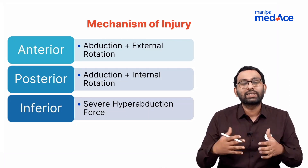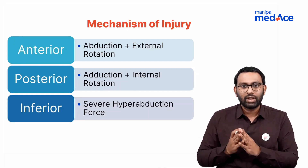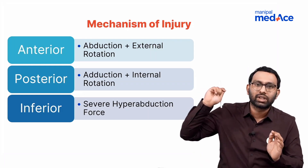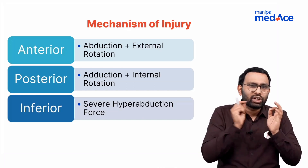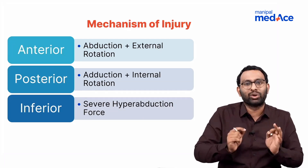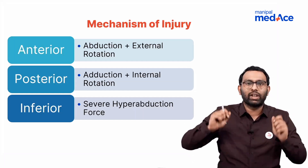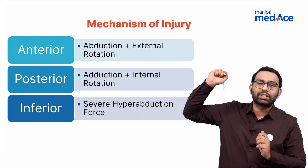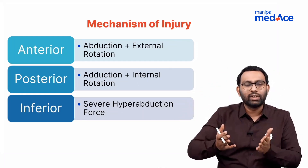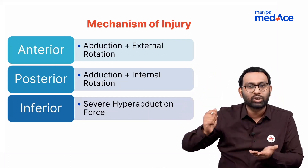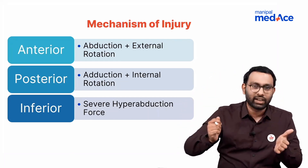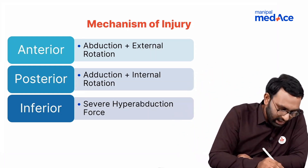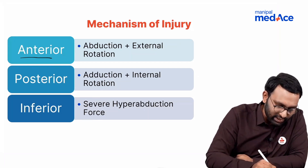For an anterior shoulder dislocation, the shoulder goes into abduction and external rotation. Think about your daily activities — yawning, throwing a ball, reaching for something at height — you always abduct and externally rotate your shoulder. This is the most common movement, and that is why anterior dislocation is the most common dislocation. The mechanism of injury is abduction and external rotation.